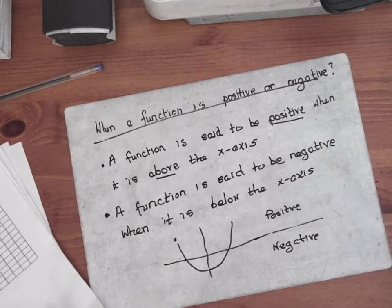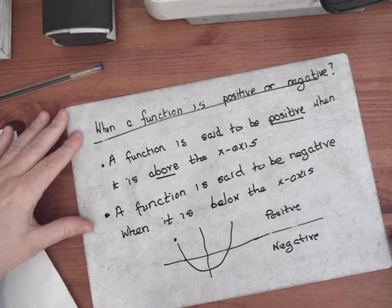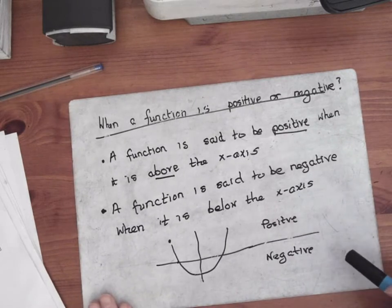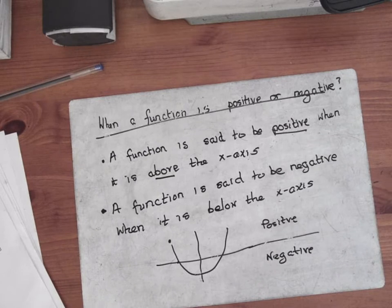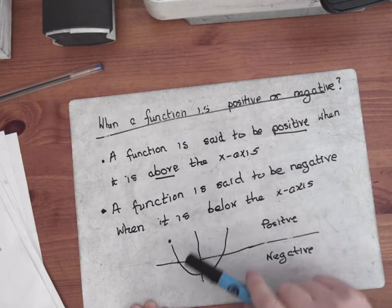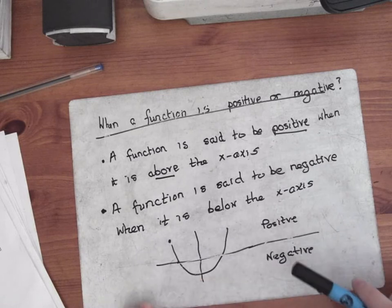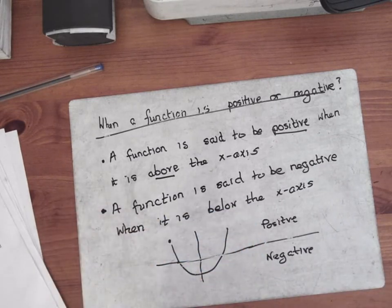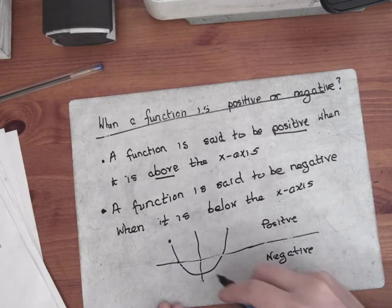So they might ask you when a function is positive or negative. What they mean is, you can stick this into your notes. When a function is positive or negative, they mean is it above the x-axis or below the x-axis. The horizontal axis is the x-axis. When it's above the x-axis it's positive, and when it's below the x-axis it's negative.